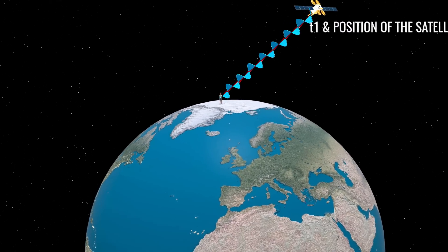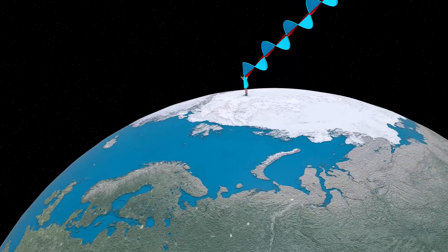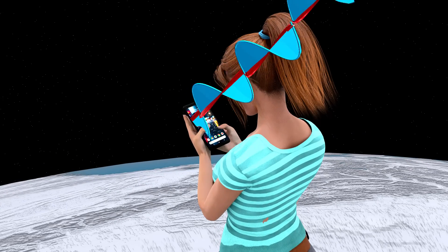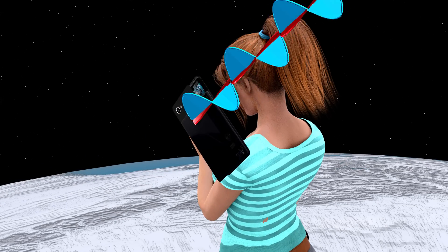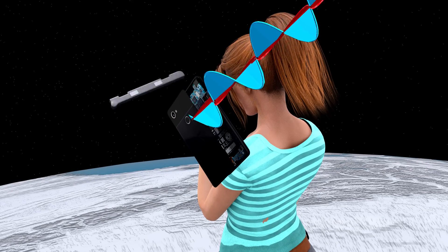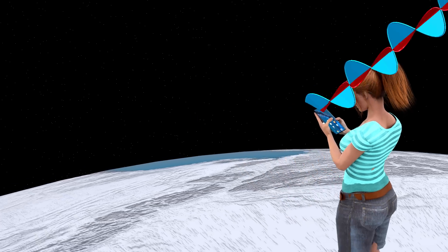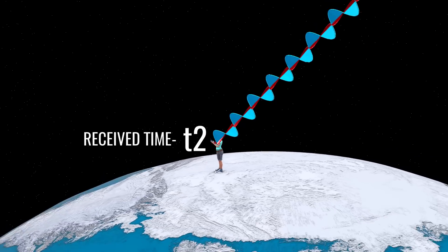Assume the receiver also has a very accurate clock. The receiver on Earth receives this signal. A typical smartphone GPS receiver is shown here. Since radio waves travel at the speed of light, your receiver receives the signal after a certain time duration.